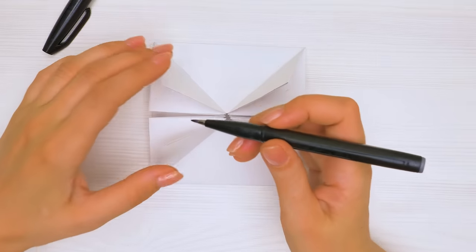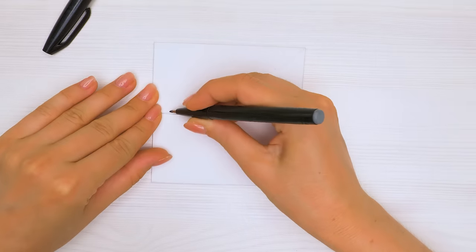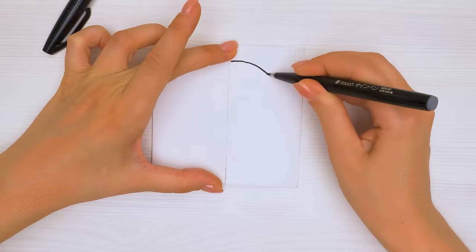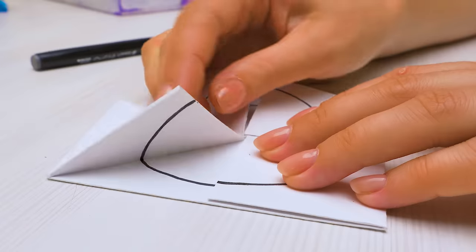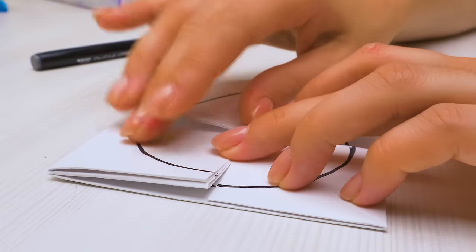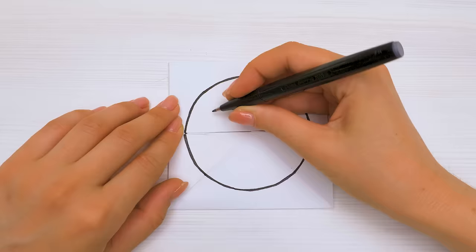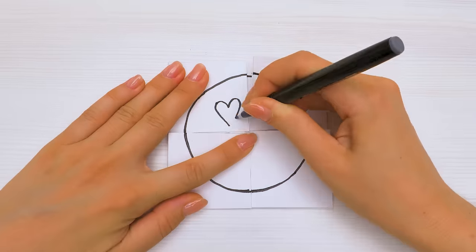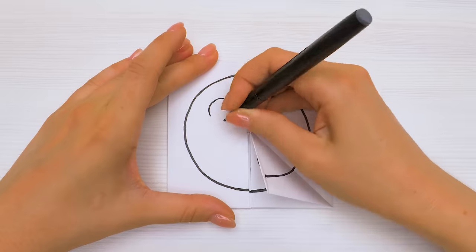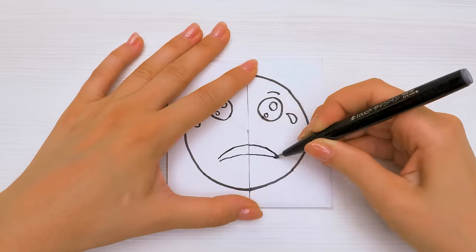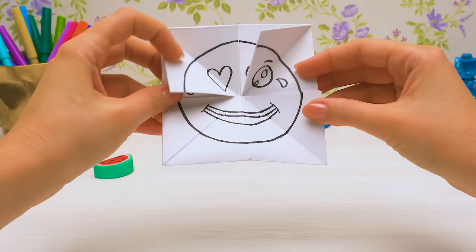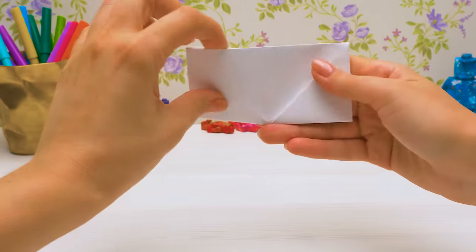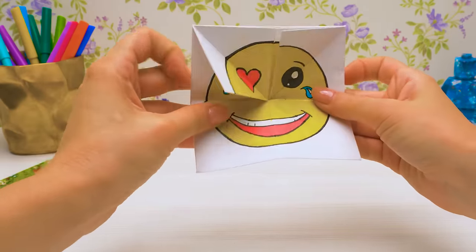Now we need to draw a circle over the surface of the square with a marker. And let's add some emojis! Hmm, looks a bit boring. We need to make it brighter. That's better!